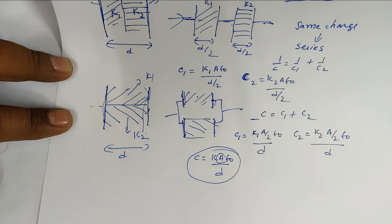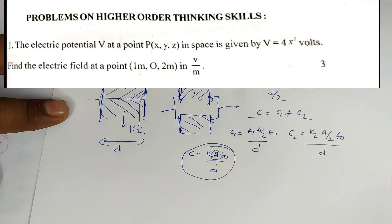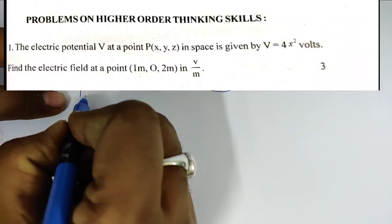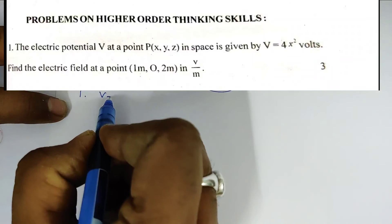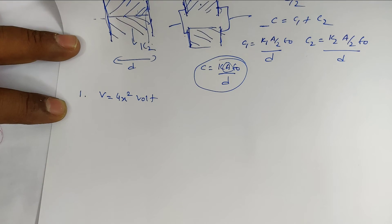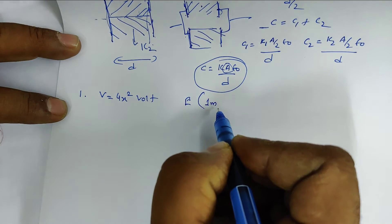Question number 7 involves higher order thinking skills. Question number 9 is about lower order thinking. The question asks: what is the electric potential at a point P with coordinates (x, y, z)? The potential is given as V = 4x².